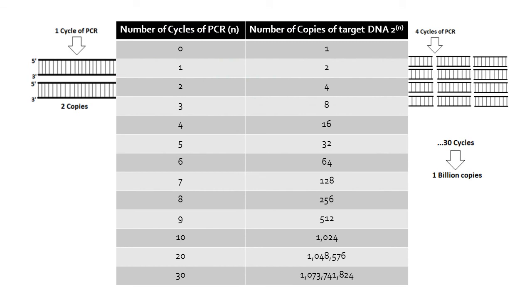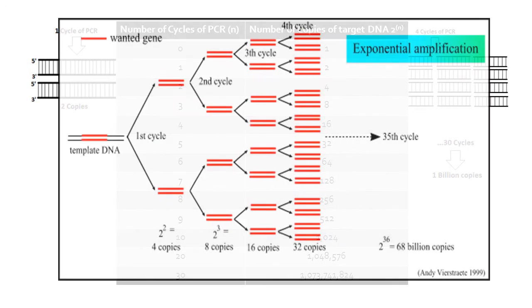The steps of the PCR amplification process are repeated for 20 to 40 cycles in order to create numerous copies of the target DNA. Through the repeated cycles, the target is amplified exponentially.